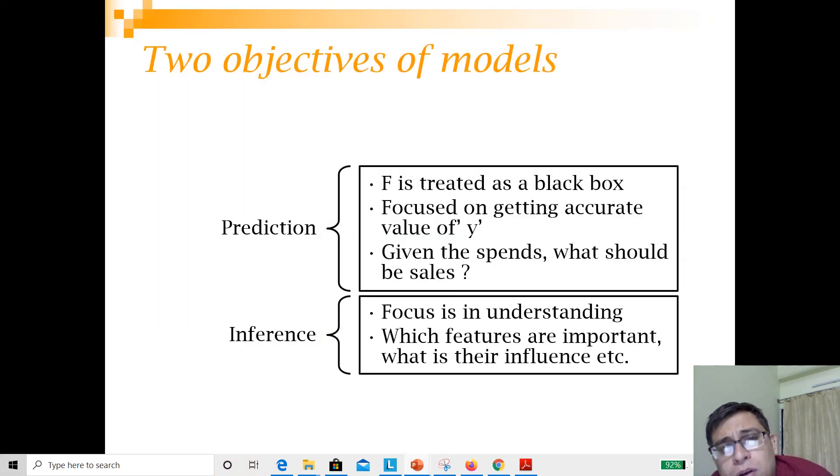A model can have two objectives. The first objective is prediction. That prediction can be either a classification category or regression forecasting, where we want to find out how accurate we are - how close our prediction is to the actuals. That is one of the objectives.